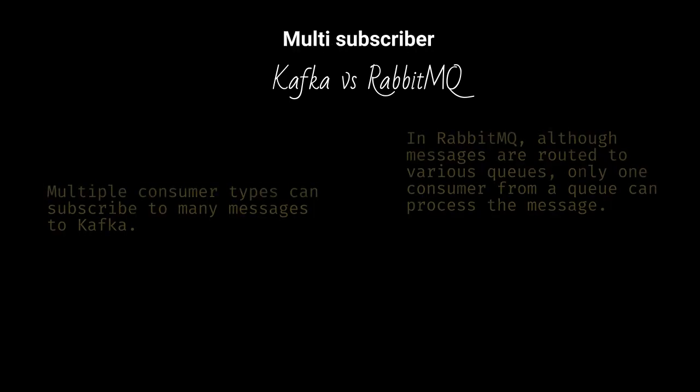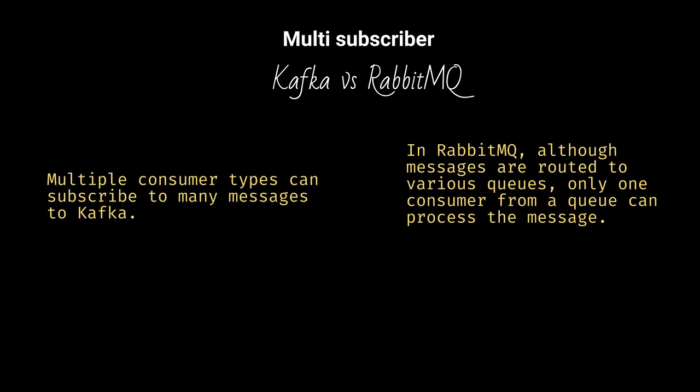Multiple consumer types can subscribe to many messages in Kafka. In RabbitMQ, although messages are routed to various queues, only one consumer from a queue can process the message.